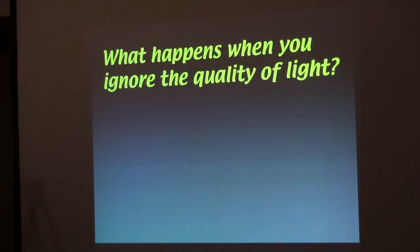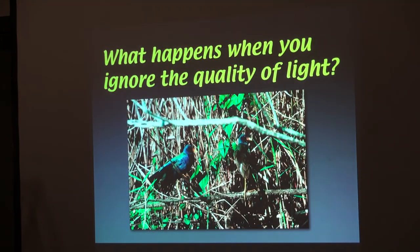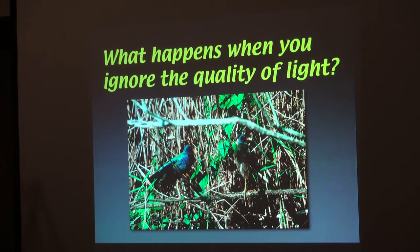What happens when you ignore all this stuff? We were on Alligator Alley and there were Purple Gallinules — I got so excited. This was on film. Bad composition, bad lighting — it just doesn't work. Even if it's a rare bird, who cares if you can't tell what it is? Don't ignore the conditions. And you can't fix this in Photoshop. You cannot modify this. Yes, you can change white balance all you want, but it's not going to be the same as going out when the conditions are right.